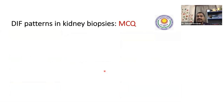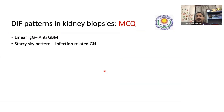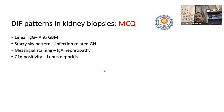DIF patterns in kidney biopsies — a summary table to remember for MCQs. Linear IgG: anti-GBM disease. Starry sky pattern: infection-related GN or post-streptococcal GN. Mesangial staining of IgA: IgA nephropathy. C1Q positivity: very common in lupus nephritis — many diseases can have C1Q, but as a basic rule, if C1Q is positive, think lupus. If you have only C3 with no immunoglobulins, think C3 glomerulonephritis — no immunoglobulins, no kappa lambda, only C3.